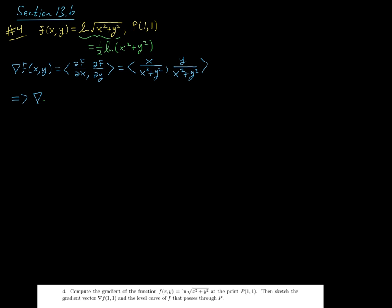So that is our gradient at any point where this thing is defined. And then at (1,1), just setting x and y equal to 1, I'm going to get one half, one half. That is the first part of the question, just finding the gradient. Then it says to sketch this gradient vector and the level curve of f that passes through P.